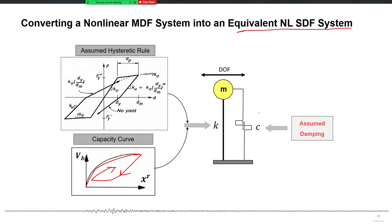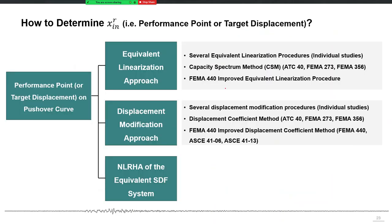So one obvious way of determining the target displacement is to run this single degree of freedom system against future ground shaking and get the peak displacement — that will be your target displacement. This is one method to determine target displacement or performance point: you convert approximately your multiple degree of freedom system into an equivalent single degree of freedom system, run the ground shaking for that system, and the peak response will be your target displacement. Then go back to your pushover analysis, add that target displacement, and extract all the responses.